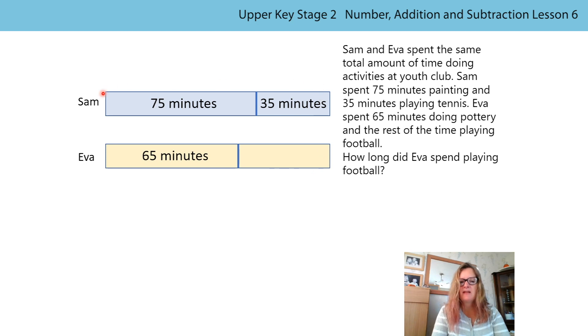So what does that tell us about the length of this bar? We know they spent the same amount of time, and you realise we've not actually worked out the total amount of time. That's not important really. What we want to look at is the structure between the numbers. So we know Eva has got 10 minutes less here, so if she spent the same amount of time, she must have 10 minutes more there.